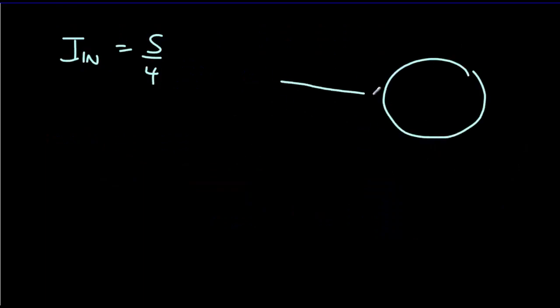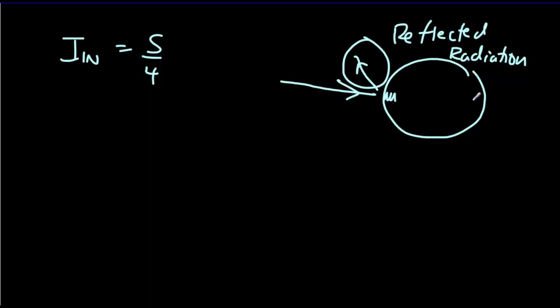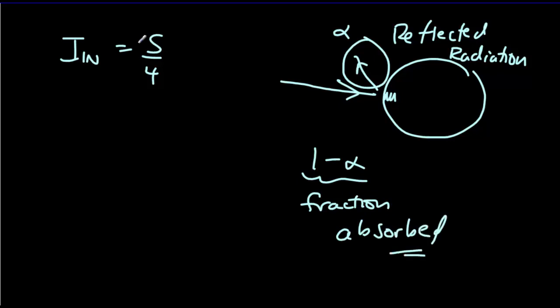We're not quite done with the input intensity, because if we consider the Earth and the sunlight coming in, some of the sunlight gets reflected off and some gets absorbed. This reflected light does not contribute to the warming of the Earth — it's like in the summertime wearing a black t-shirt where you absorb the sun's rays and get hotter, versus a shiny silver t-shirt where all the light reflects. The fraction of solar radiation that is reflected is called the albedo, alpha, and the fraction absorbed is 1 minus alpha. That's the fraction that contributes to our input intensity.